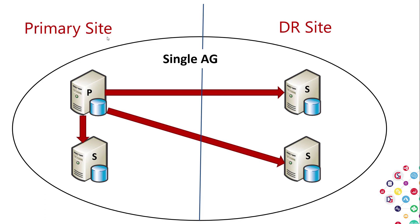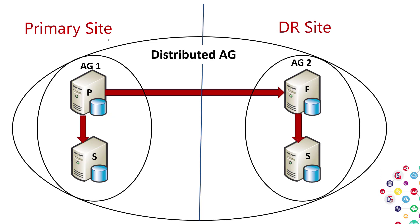A DR site without distributed AGs sends all updates from the primary. With a distributed AG, each site has its own AG — updates go from the primary of AG1 to the local secondary and to the forwarder on AG2, and that forwarder takes care of replicating out to its remote replicas.